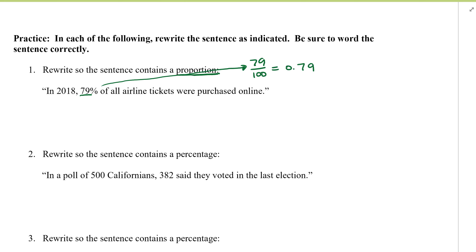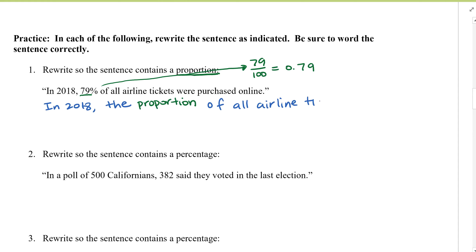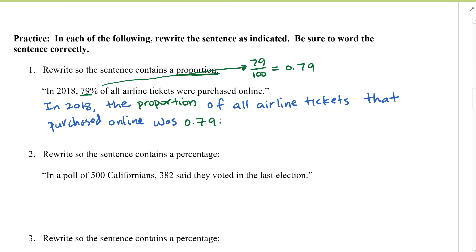Now I rewrite the sentence: 'In 2018, the proportion of all airline tickets purchased online was 0.79.' Again, you can rephrase the sentence but be careful — you want to include the word 'proportion' in it.